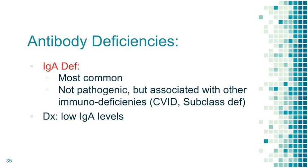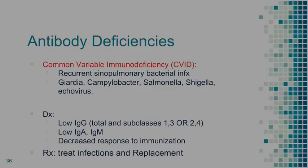IgA deficiency is one of the most common immune deficiencies. In itself it's not pathogenic, but if you have any additional condition — even diabetes or low-risk medications — you'll see a lot of infections. You have to rule out anything else going on. It's detectable when you get your immunoglobulin panel and IgA is low.